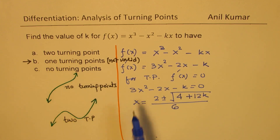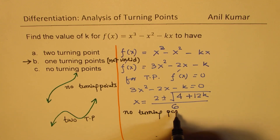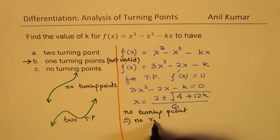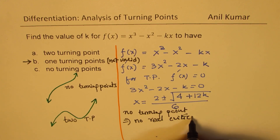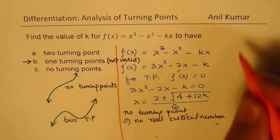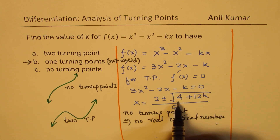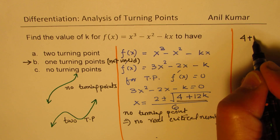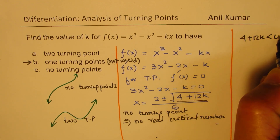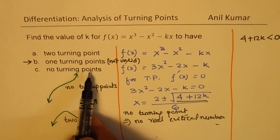If it has no turning points, that means we have no real critical number. That is possible only when b² - 4ac is less than 0. So the condition here is: 4 + 12k should be less than 0. In that case, we have no critical number and therefore no turning points.